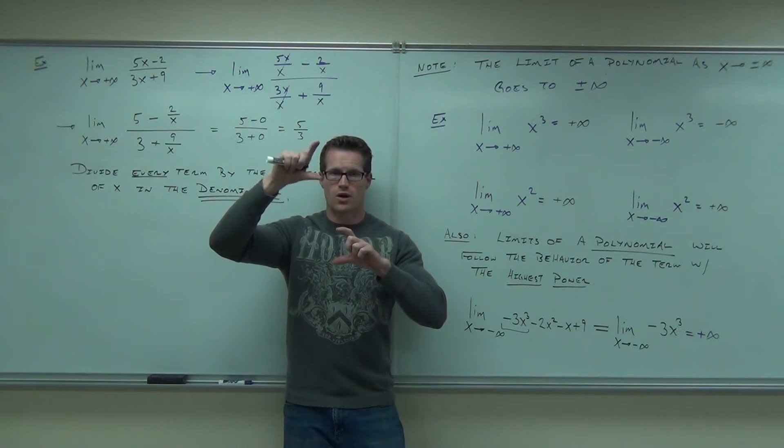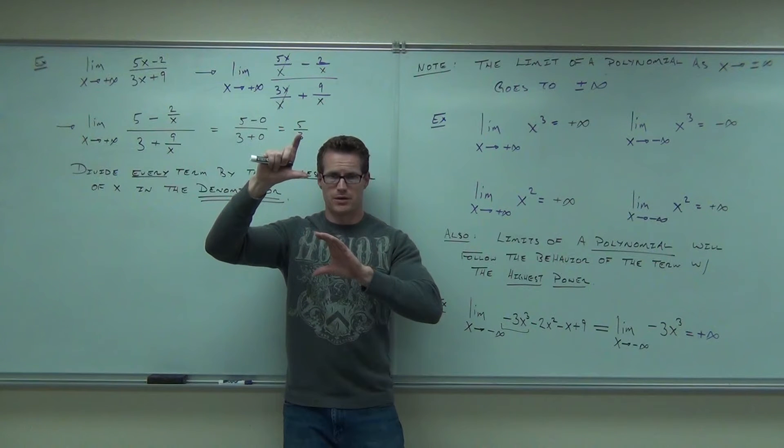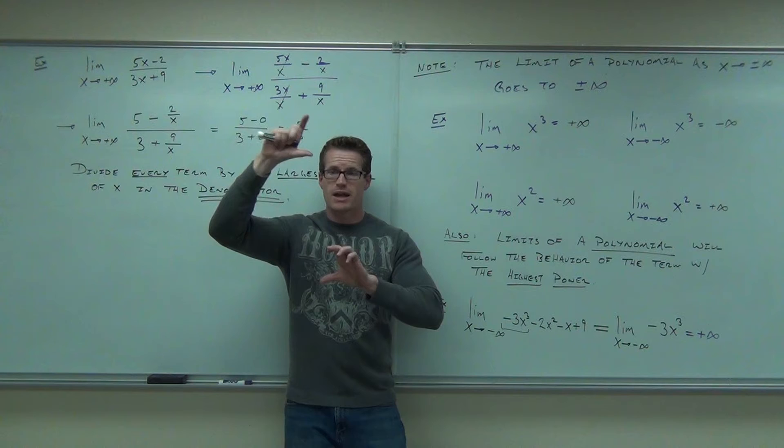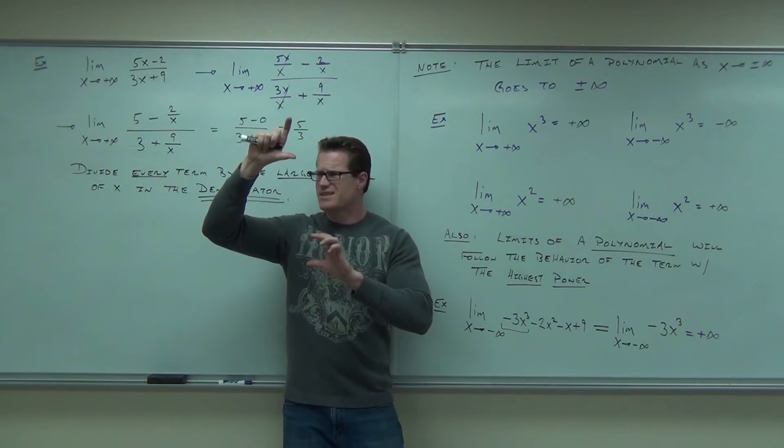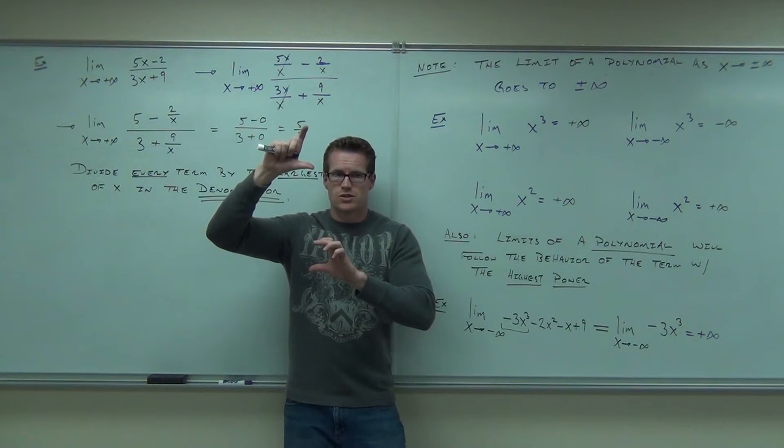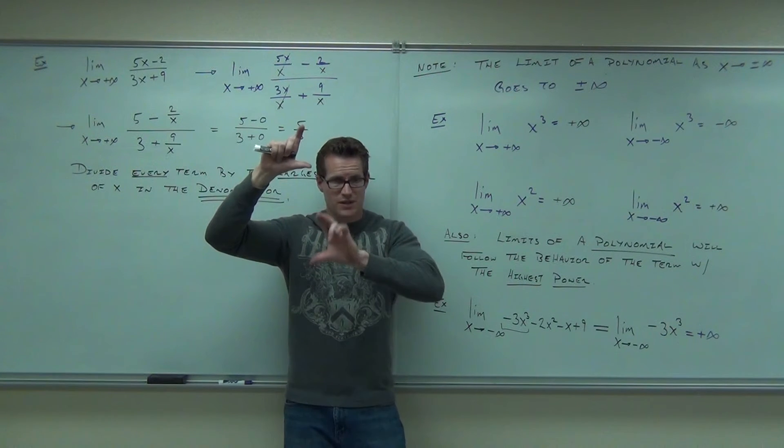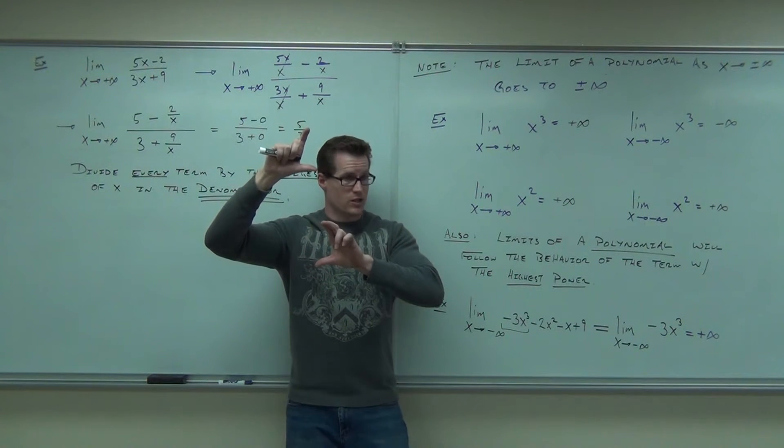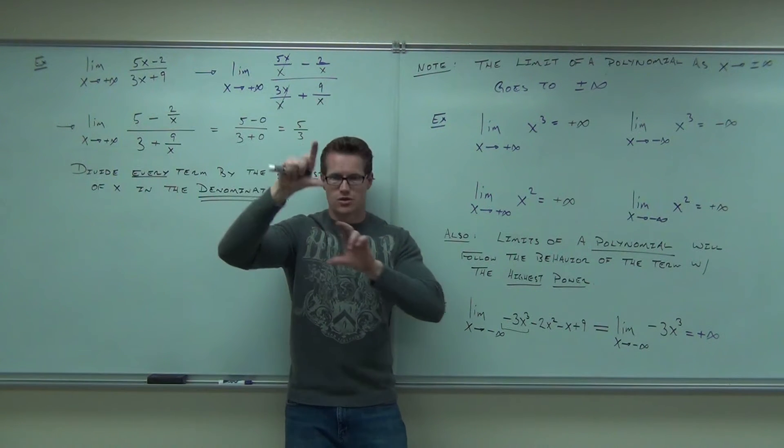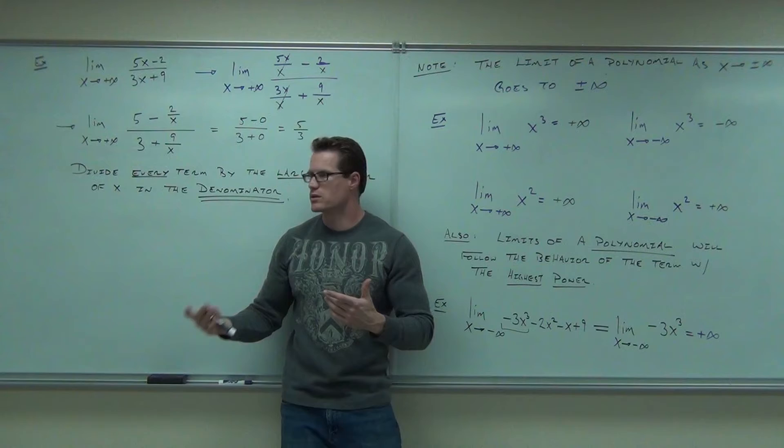If your power is larger on the numerator than the denominator, well, you divide by this power, this is still going to have an x up there somewhere, right? That's infinity, either positive or negative infinity. If this one is smaller than this one, if this one's larger, well, then you're going to be going to zero. Because you divide by this one, no x's here, x here, you're going to zero. That's one way you can look at that as well.